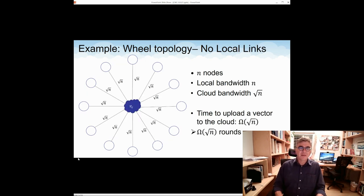The other thing to look at is what happens if we use only the cloud and forget about the local network, the ring. Without the ring, the problem of diameter goes away, but now we have a problem of bandwidth. Recall that the size of each vector is n bits and the size of the links connecting processors to the cloud is square root of n. It follows that the time to upload a single vector to the cloud is omega of square root of n rounds. So there's no way to solve the vector addition problem in less than omega of square root of n rounds. That's the other solution.